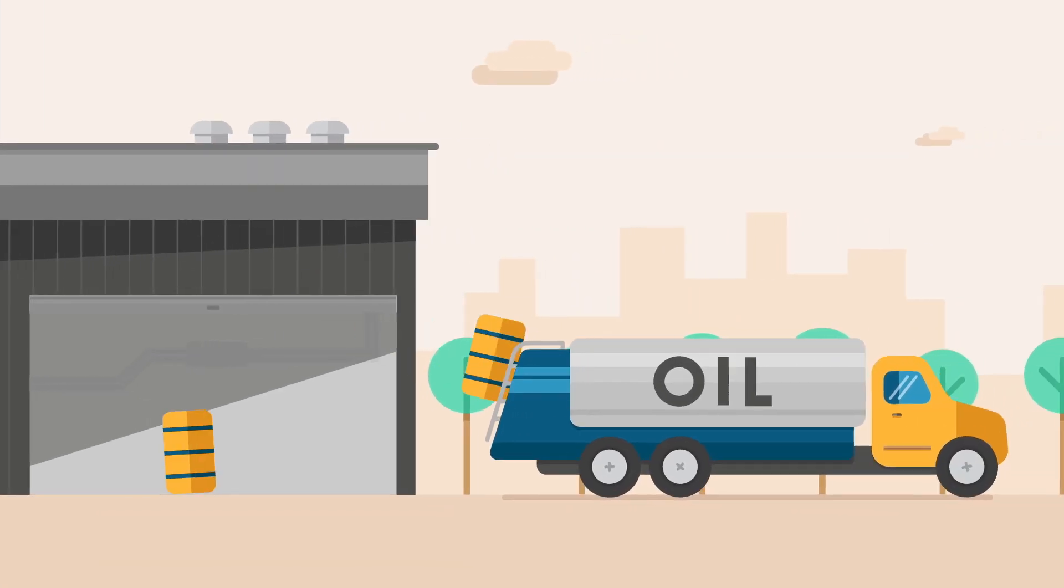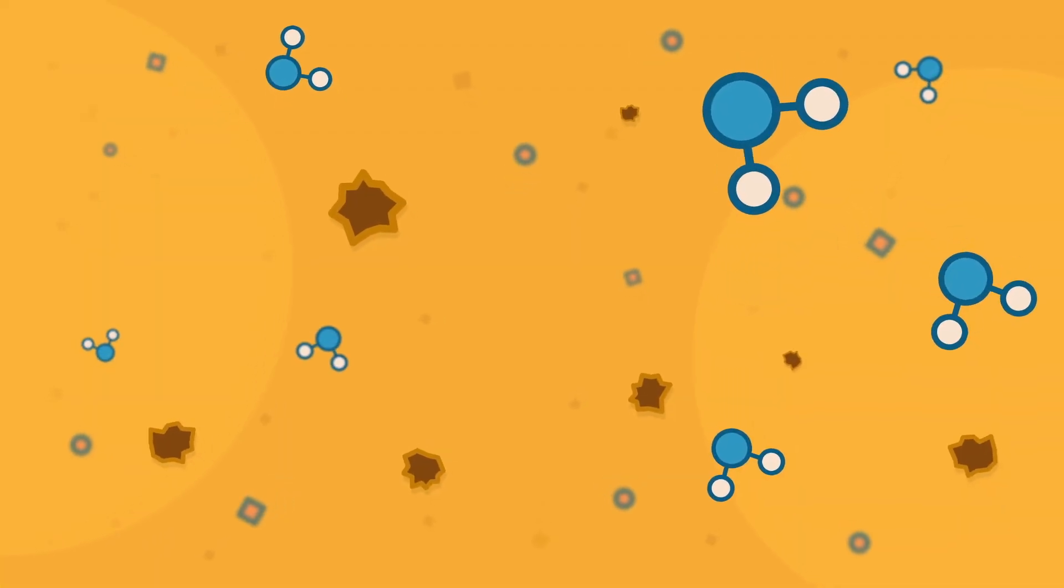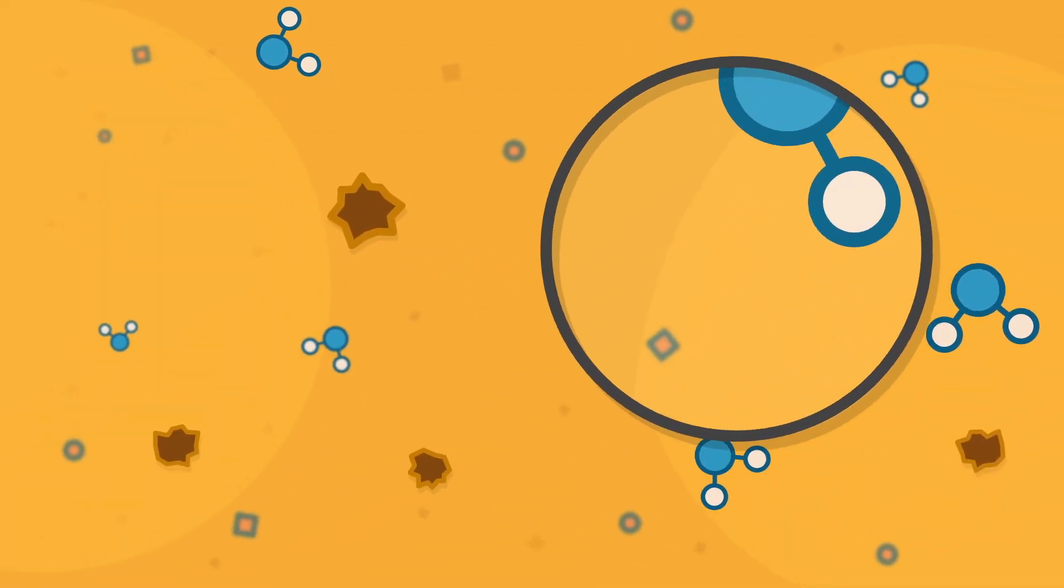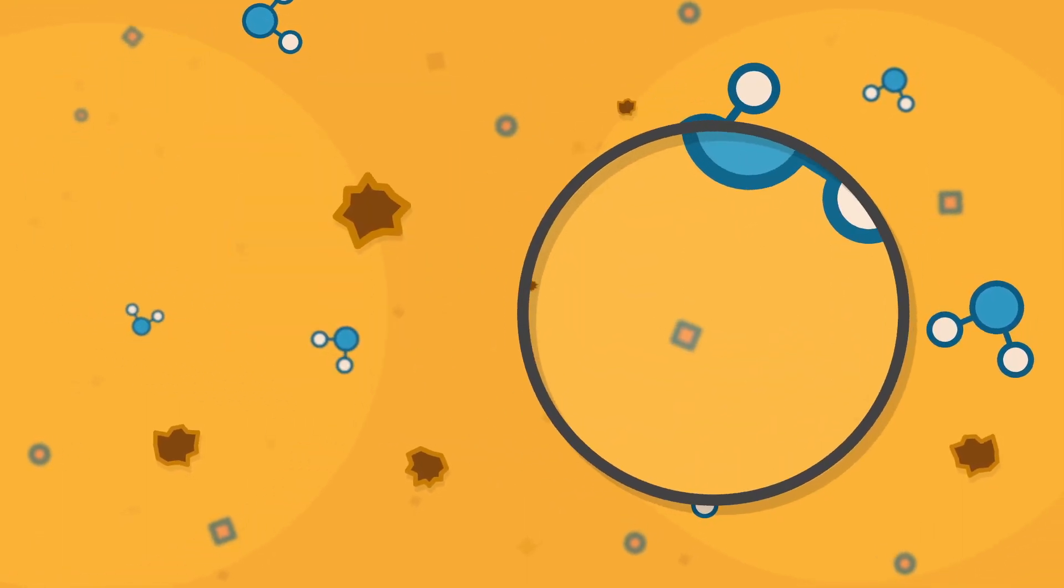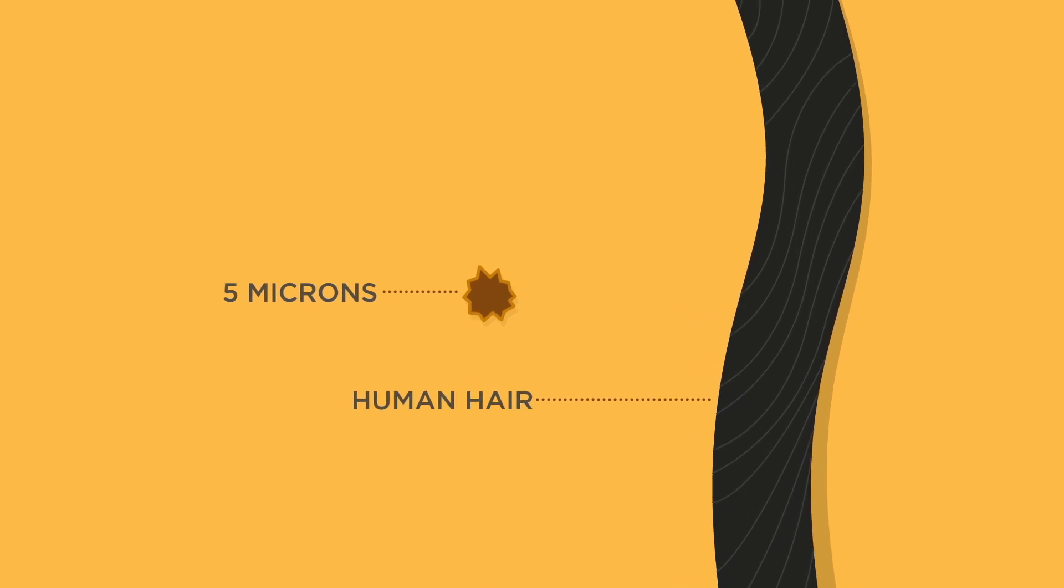Did you know that when oil arrives at your facility, it's already been contaminated with dirt particles and water? And that a particle as small as 5 microns can bring your manufacturing floor to a screaming halt? 5 microns! That's one-tenth the size of a human hair.